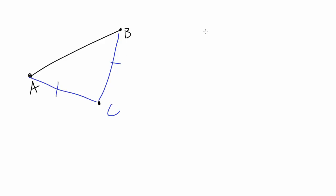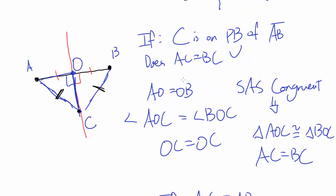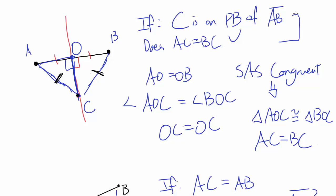Now let's consider the converse. Given segment AB, let's pick a point C such that the distance from A equals the distance from B. Is C on the perpendicular bisector of AB? You may say: if C is on the perpendicular bisector then AC equals BC, so doesn't the opposite have to be true right away? The reason we have to prove it both ways is there may be some other point that is not on the perpendicular bisector and still has equal distance from A and B. So we have to prove the converse to rule that out.